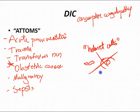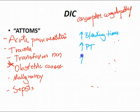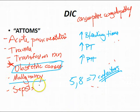Labs for DIC: increased bleeding time, increased PT, and increased PTT — because it's consuming everything and coagulation factors are down. Factors 5 and 8 are more cofactors than true factors. The main ones to remember for causes: acute pancreatitis, trauma, transfusion reactions, obstetric causes, malignancy, and sepsis — especially sepsis.